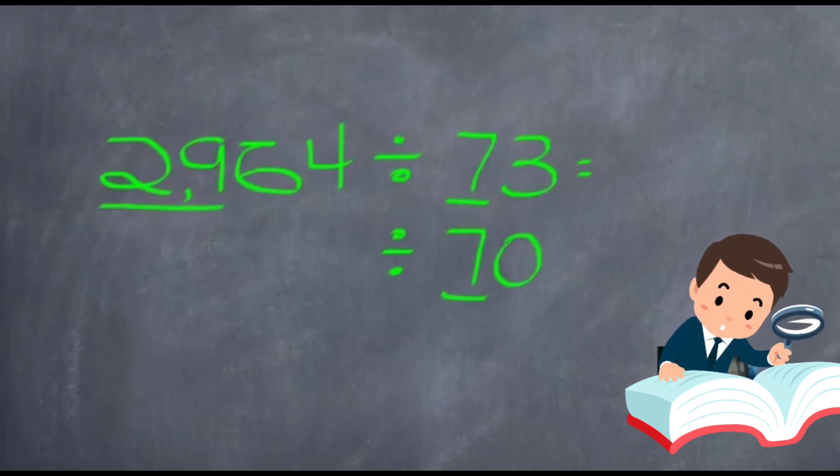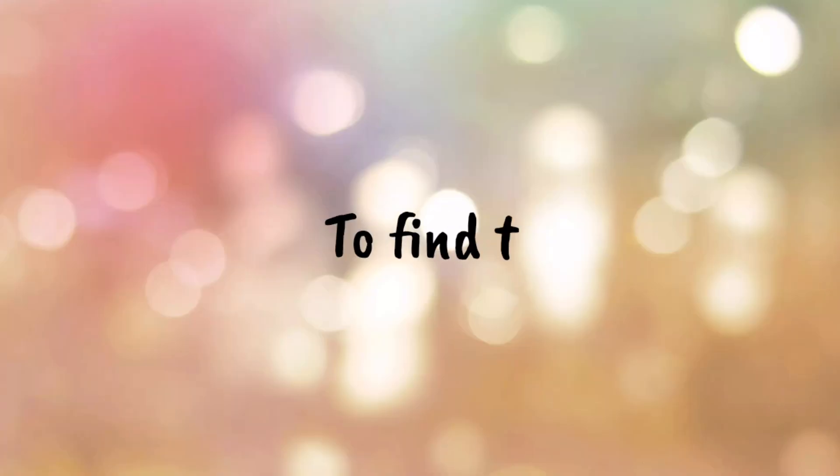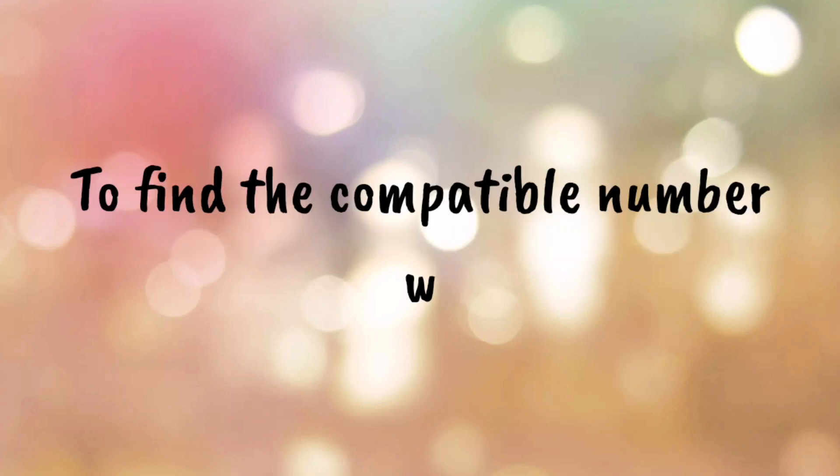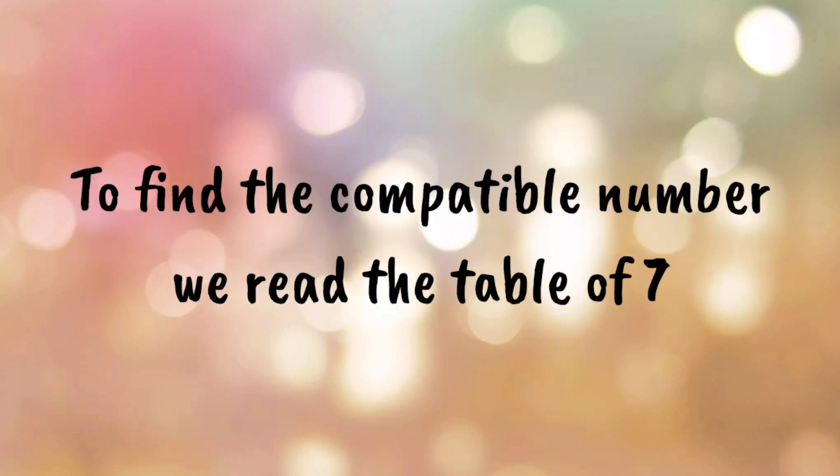Now we take first two numbers of dividend. That is 29. To find the compatible number, we read the table of 7.